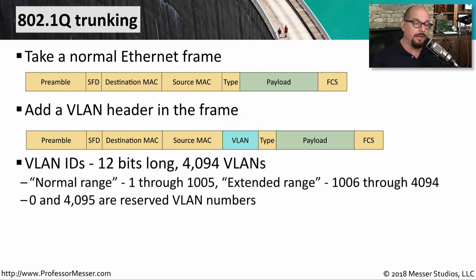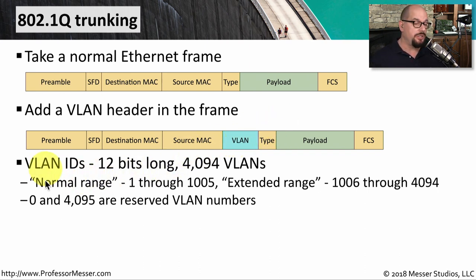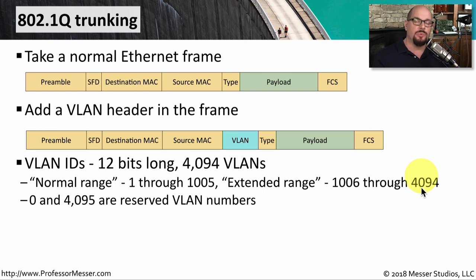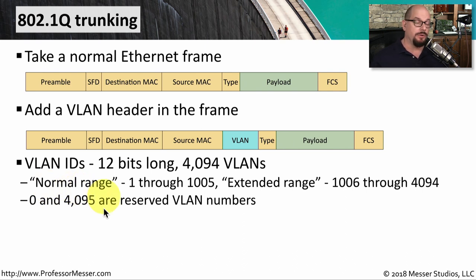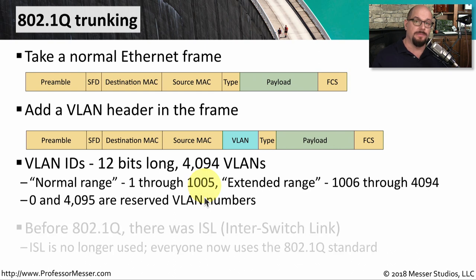If you were to grab a packet capture and look at the VLAN field, you'd see that it's 12 bits long. That gives us enough numbers to come up with 4,094 possible VLANs on this particular trunk. Some devices like Cisco switches separate these into a normal range of VLANs, which is 1 through 1,005, and an extended range, which is VLANs numbered 1,006 through 4,094. Other devices simply use all numbers inclusive between 1 and 4,094. Note that the very first and last numbers — 0 and 4,095 — are reserved VLAN numbers and cannot be specified as separate VLANs on your switch.